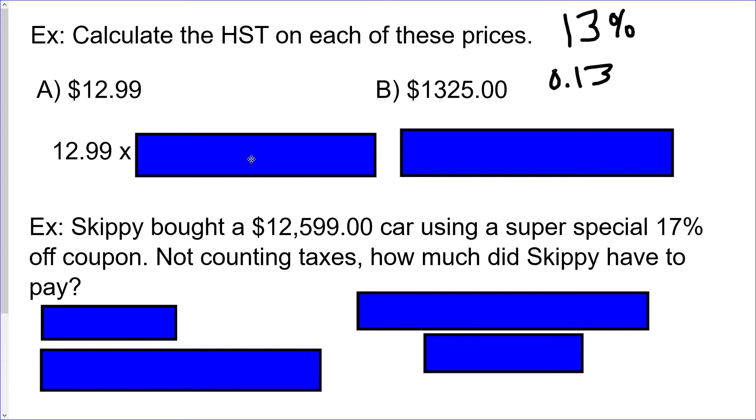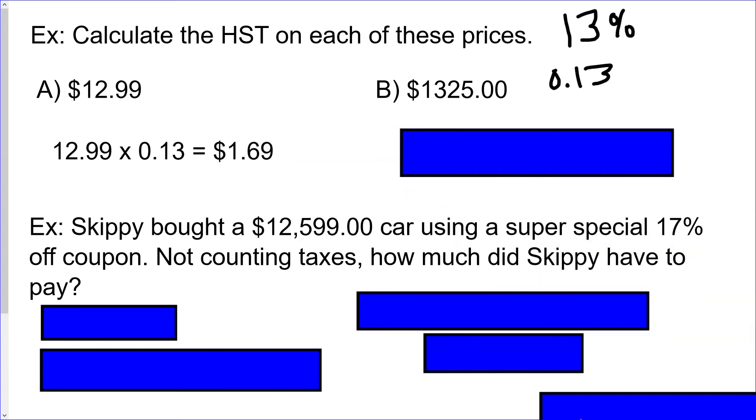Hopefully you remember that from last slideshow and this one. So you would take 12.99 times 0.13, and your answer then is $1.69. When you're finding out things like tax with a number like 13% or 0.13, often you will need to round your answer to two decimal places to reflect just dollars and cents. So for question B, I would like you to do that one. So please pause for a moment, try it out, see how you do, and then keep going with the video.